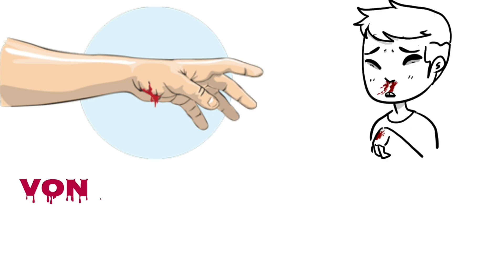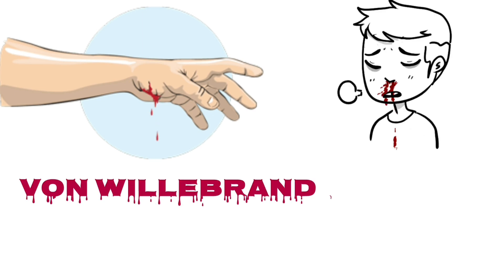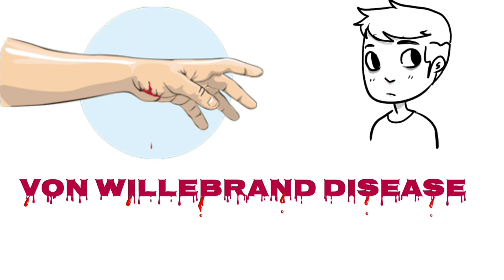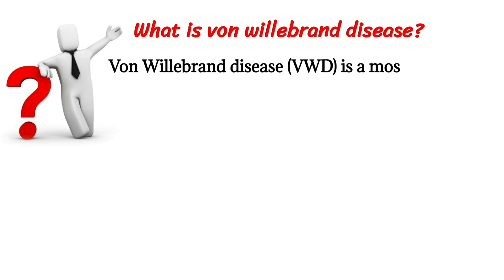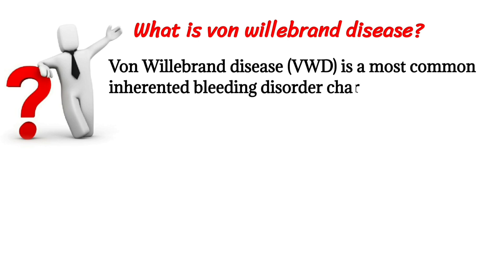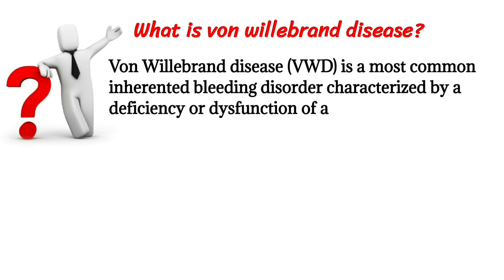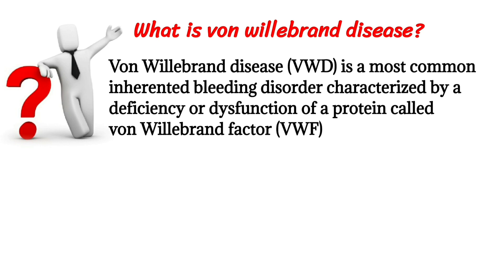Today we will talk about von Willebrand disease. First, we will define von Willebrand disease. Von Willebrand disease is the most common inherited bleeding disorder, characterized by an insufficiency or dysfunction of a protein called von Willebrand factor, which impairs the blood's ability to clot properly.